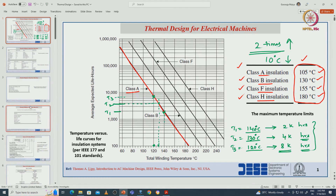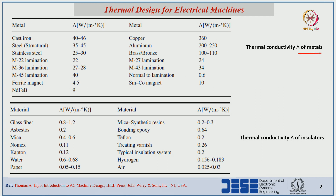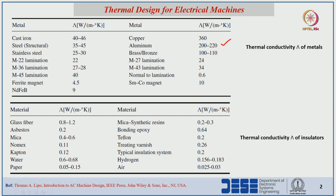We can see different thermal conductivity values for materials used in electrical machines. For copper, thermal conductivity is 360 watt per meter Kelvin. For aluminum it is 200 to 220. For M27 and M43 laminations, the values are 24 and 34 watt per meter Kelvin respectively. For stainless steel, cast iron, ferrite magnets, and neodymium magnets, different thermal conductivity values are listed. Generally, copper windings are 360 and aluminum windings are 220 watt per meter Kelvin.